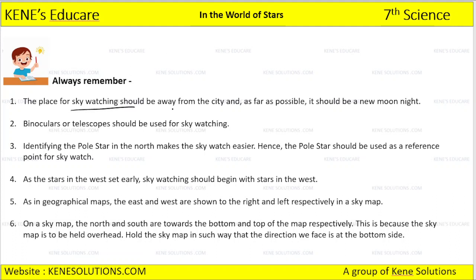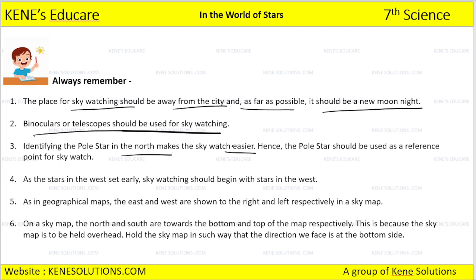The place for sky watching should be away from the city, and as far as possible, it should be a new moon night. Binoculars and a telescope should be used for sky watching. Identifying the pole star makes sky watching easier. As the stars in the west set early, sky watching should begin with the stars in the west.